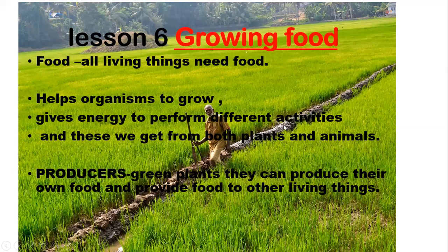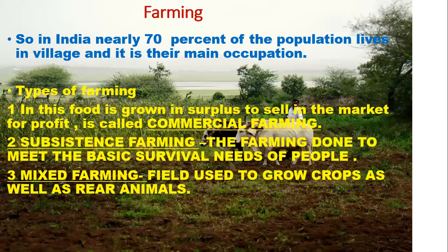Food helps organisms to grow and gives us energy to perform different activities. We get this from both plants and animals. Green plants are called producers because they can produce their own food.